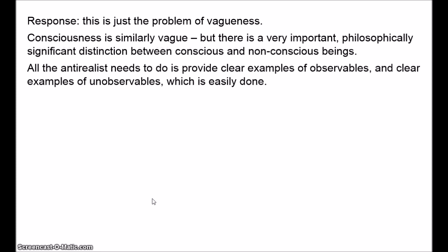Van Fraassen thinks that Maxwell's appeal to the continuum is really just applying the problem of vagueness, which is a general philosophical problem, so we can't use this to attack the anti-realist in particular. All the anti-realist needs to do, according to Van Fraassen, is provide clear examples of observable objects and clear examples of unobservable objects. If there's a bit of a grey area, that's to be expected because there are grey areas in every topic. Clear cases: observables include trees, cars, planets, oceans, the moons of Jupiter, mountains, spiders, hands and feet; unobservables include electrons, neutrinos, dark matter, Yersinia pestis, mitochondria, genes, and the strong nuclear force. There may be cases in between, but we have a clear set of observables and unobservables, and that's good enough.